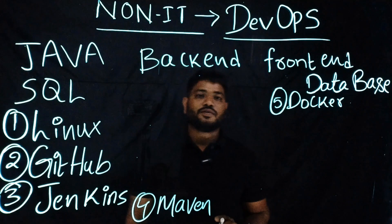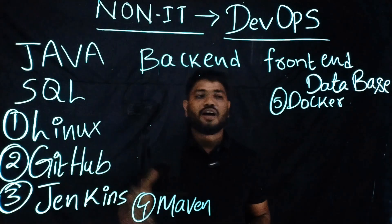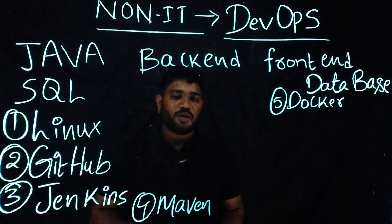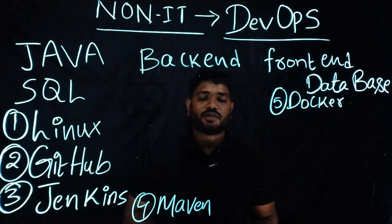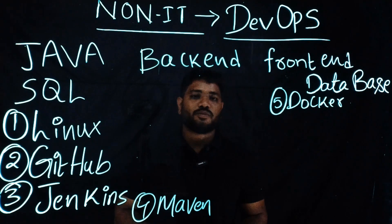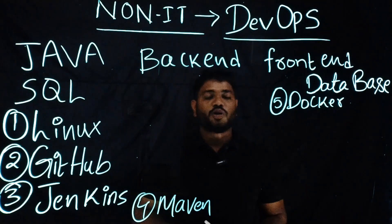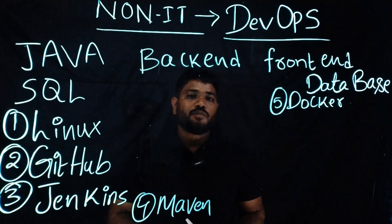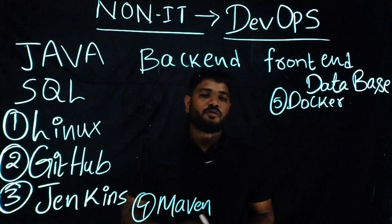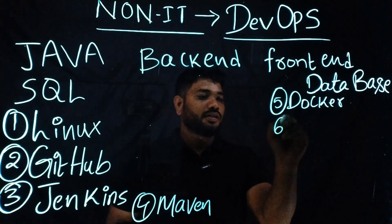If you step into an organization where hundreds of microservices are hosted in Docker, you will need a tool to manage and orchestrate all those Docker containers. Tools available in the market include Kubernetes, Docker Swarm, and OpenShift. As a beginner, I suggest starting with Kubernetes because it is open source and you can download it on your Windows or Linux machine and practice. The sixth tool I'm listing is Kubernetes.